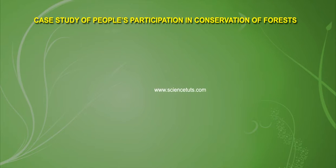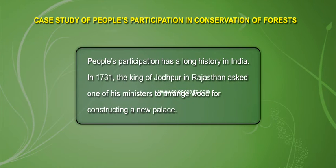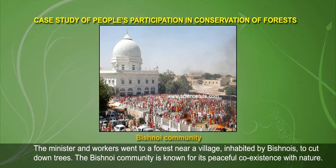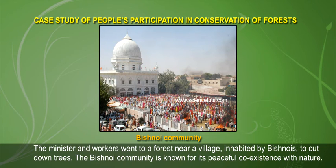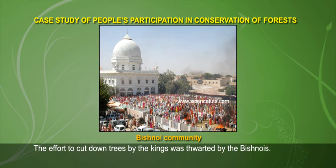People's participation in conservation of forests has a long history in India. In 1731, the king of Jodhpur in Rajasthan asked one of his ministers to arrange work for constructing a new palace. The minister and workers went to a forest near a village inhabited by Bishnois to cut down trees. The Bishnoi community is known for its peaceful coexistence with nature, and the effort to cut down trees was thwarted by them.